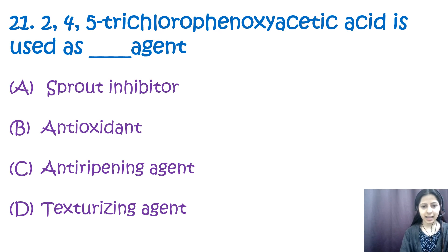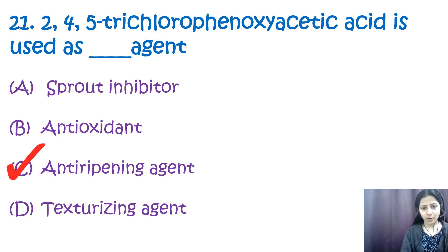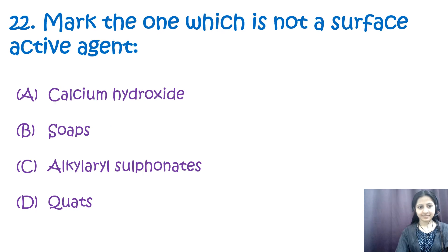Question number twenty-one: 2,4,5-trichlorophenoxyacetic acid is used as what agent? Options are: a) sprout inhibitor, b) antioxidant, c) anti-ripening agent, d) texturizing agent. The correct option is c, anti-ripening agent. 2,4,5-trichlorophenoxyacetic acid is a synthetic auxin used as a herbicide to defoliate broad-leaved plants. It is a plant hormone and is not a sprout inhibitor, antioxidant, or texturizing agent.